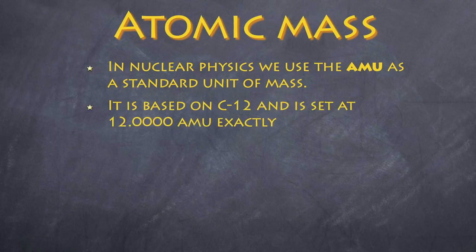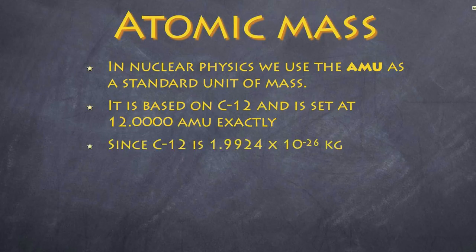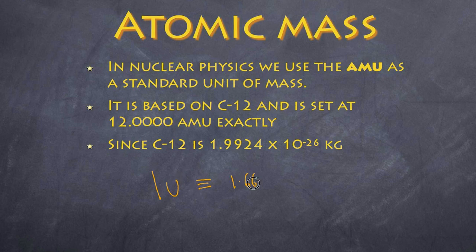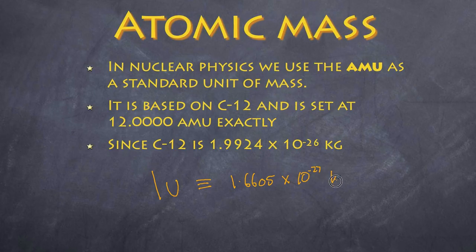And if carbon 12 made up of 6 protons and 6 neutrons if its atomic mass is set exactly 12 AMU since carbon 12 is 1.99 by 10 to the power of negative 26 we now have an atomic mass unit that is 1u is equivalent to 1.6605 by 10 to the power of negative 27 kilograms. We're going to use numbers that are a little bit more friendly to us.